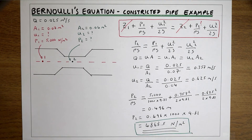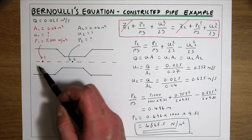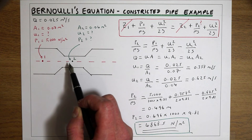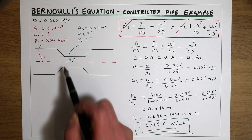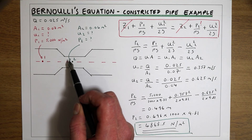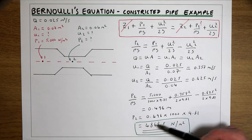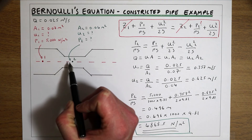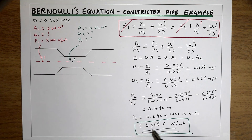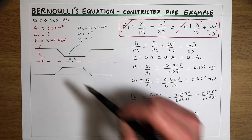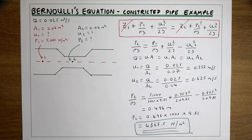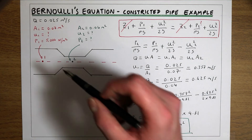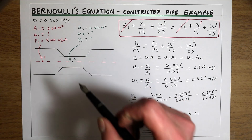This is an answer that some people initially find counter-intuitive, because we start with a low velocity in a large area, then constrict the pipe to get a much quicker velocity. Sometimes people expect the pressure to go up when constricting the pipe and increasing the velocity, but we can see from this procedure that the pressure is actually going down — from 5,000 N/m² at point 1 to 4868.5 N/m² at point 2. To explain why, we need to think about what's happening to the pressure heads and velocity heads inside the pipe.